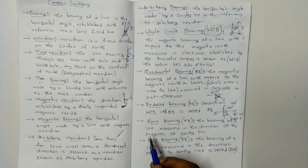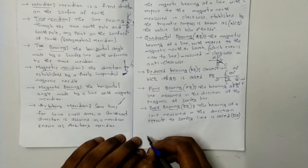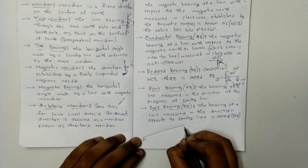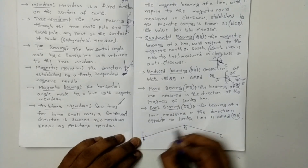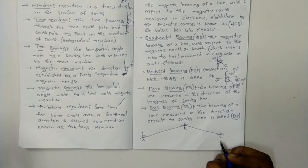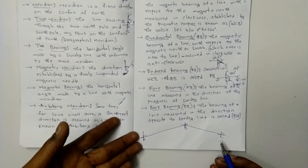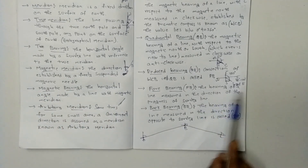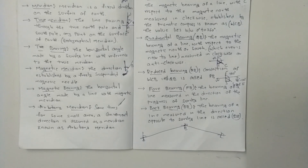Fore bearing: the bearing of a line measured in the direction of progression of a survey line is called fore bearing. Back bearing: the bearing of a line measured in the direction opposite to the survey line is called back bearing.